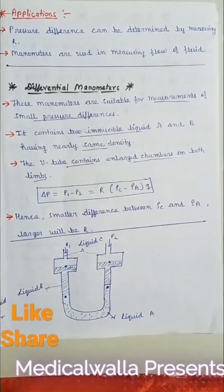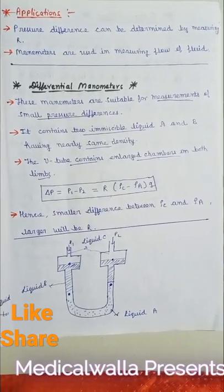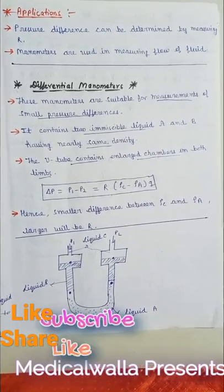Delta P is equal to P1 minus P2 is equal to R times rho C minus rho A into g. Hence, a smaller difference between rho C and rho A, larger will be R.